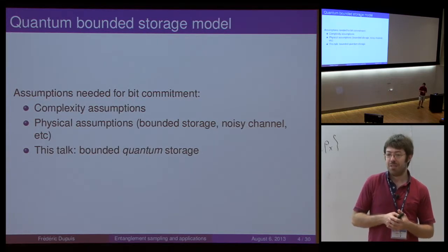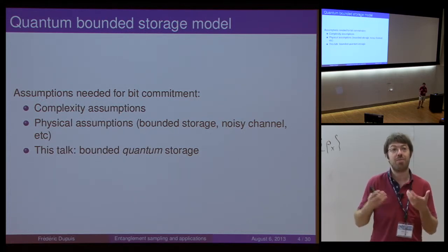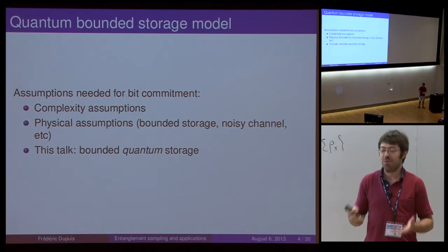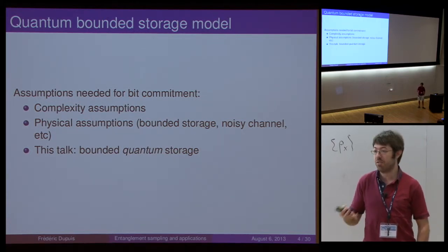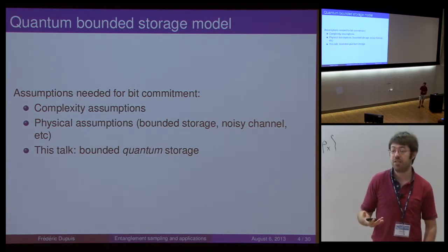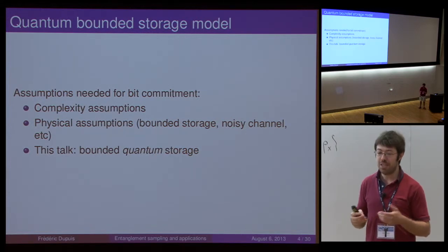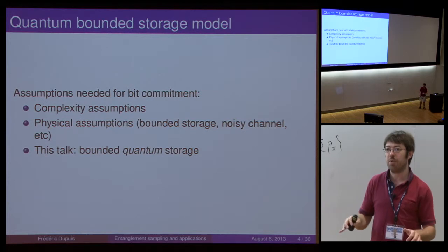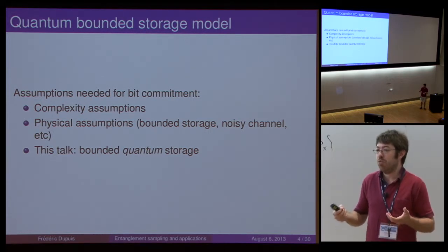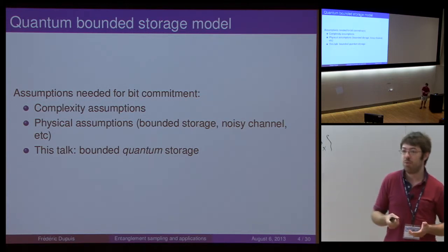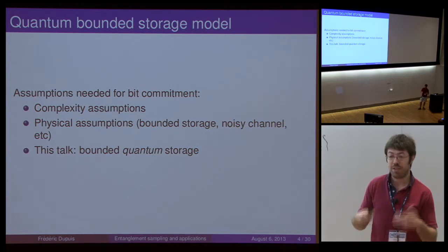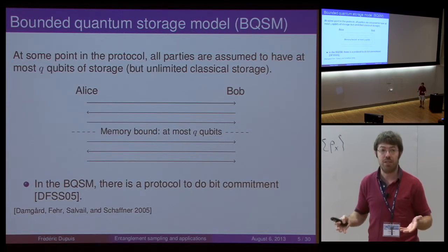We can't do bit commitment without making some kind of assumption about either mathematical statements or about the adversary. Some assumptions you can make are assumptions about complexity theory — namely that there don't exist efficient algorithms to solve some problems. Or you can make physical assumptions about the adversary. As we saw in the previous talk, you can assume the adversary can't do globally entangling operations and is restricted to local operations, or you can restrict the adversary to not control all the noise in some noisy channel.